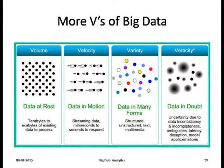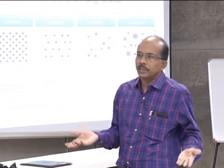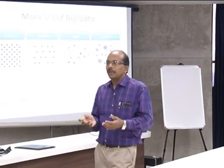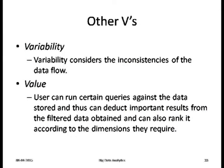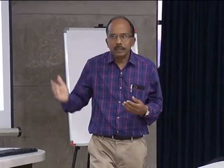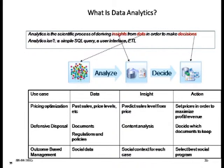Beyond the three Vs, additional characteristics include veracity — how to believe the data, its trustworthiness. Lots of messages spread on social networks without knowing if they're real. Veracity addresses uncertainty due to data inconsistency, incompleteness, and data in doubt — whether the data is believable or unbelievable. There is also value — when you perform operations over the data and identify important results, that computed insight is called value. You can add any number of Vs depending on the experience you're facing.